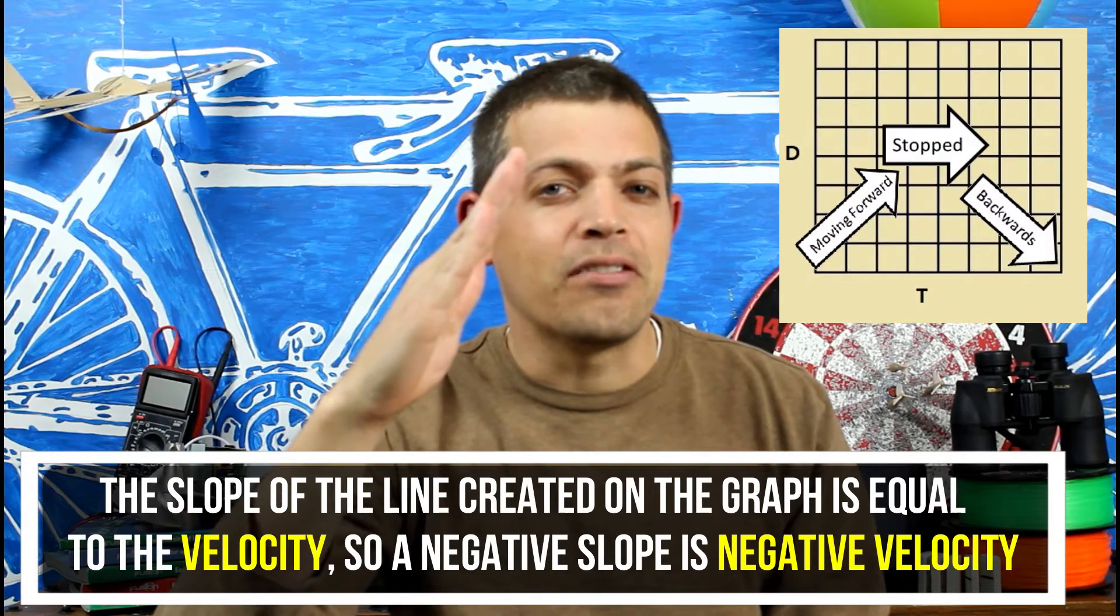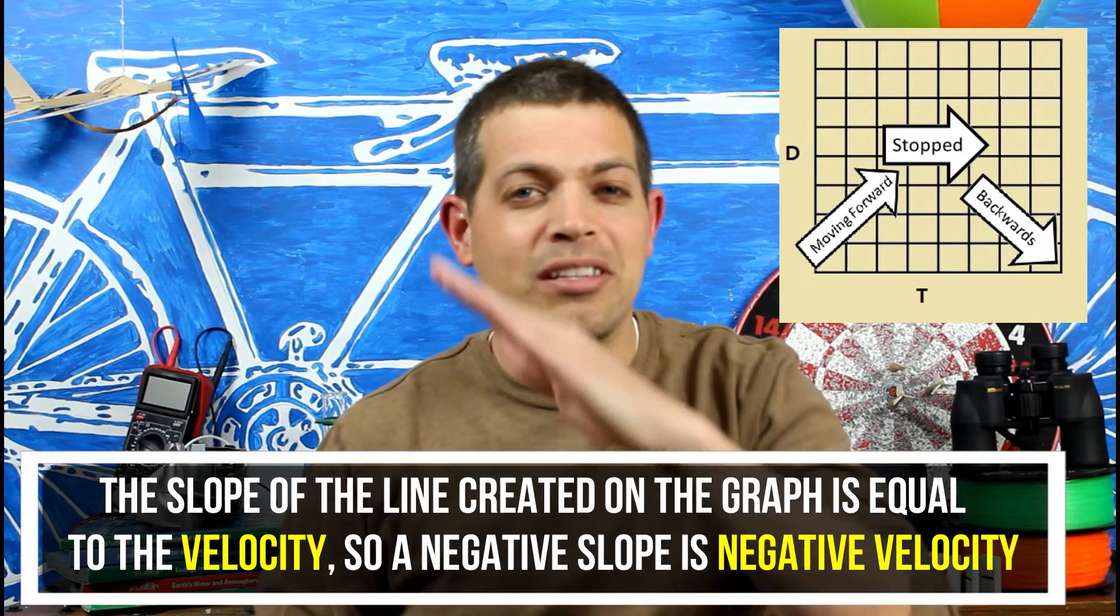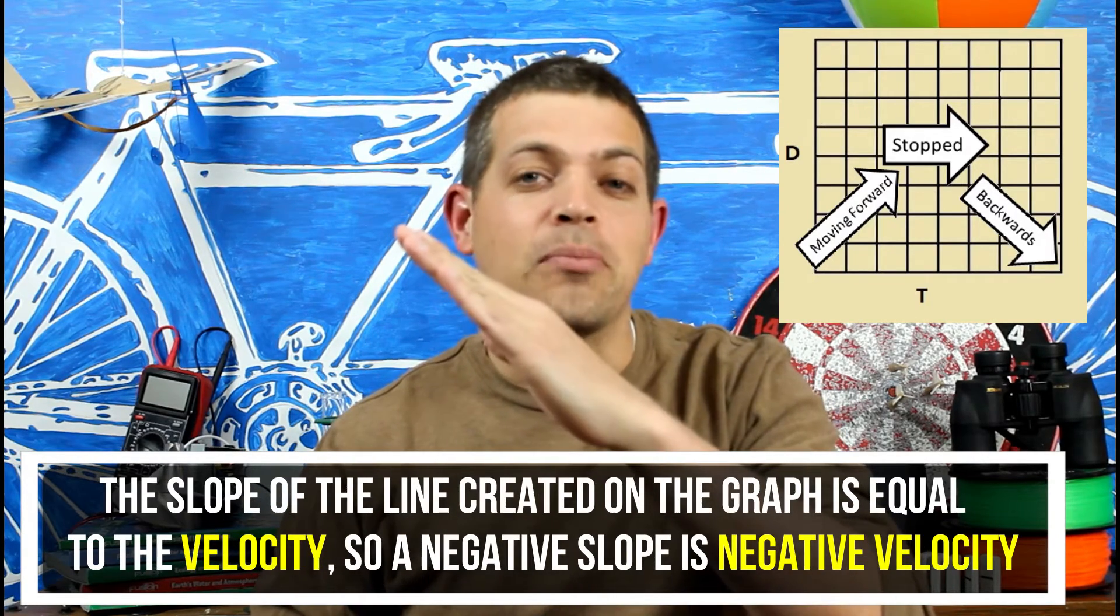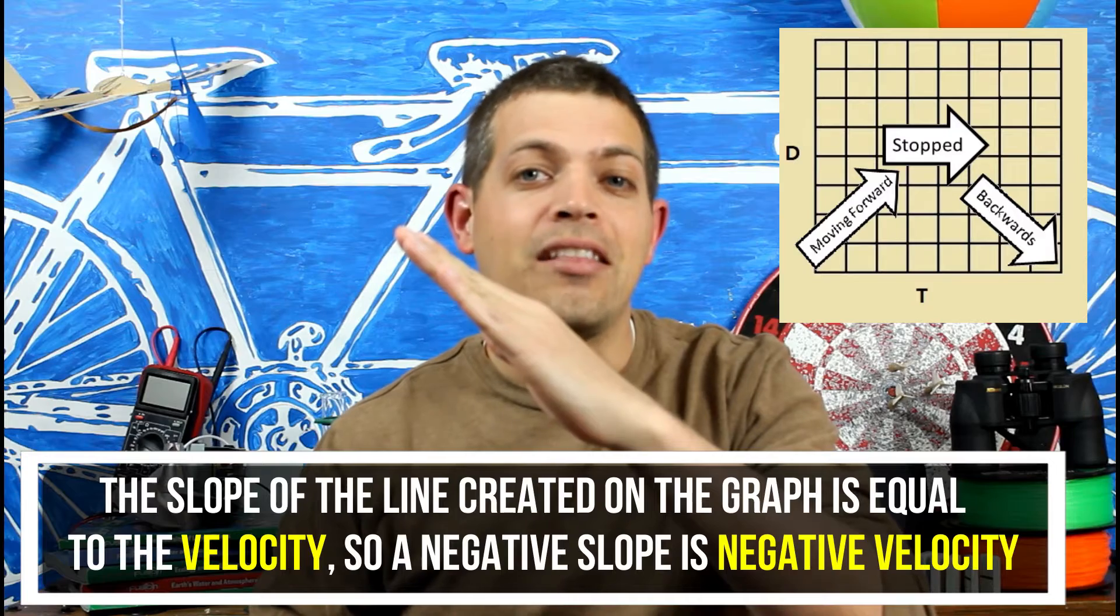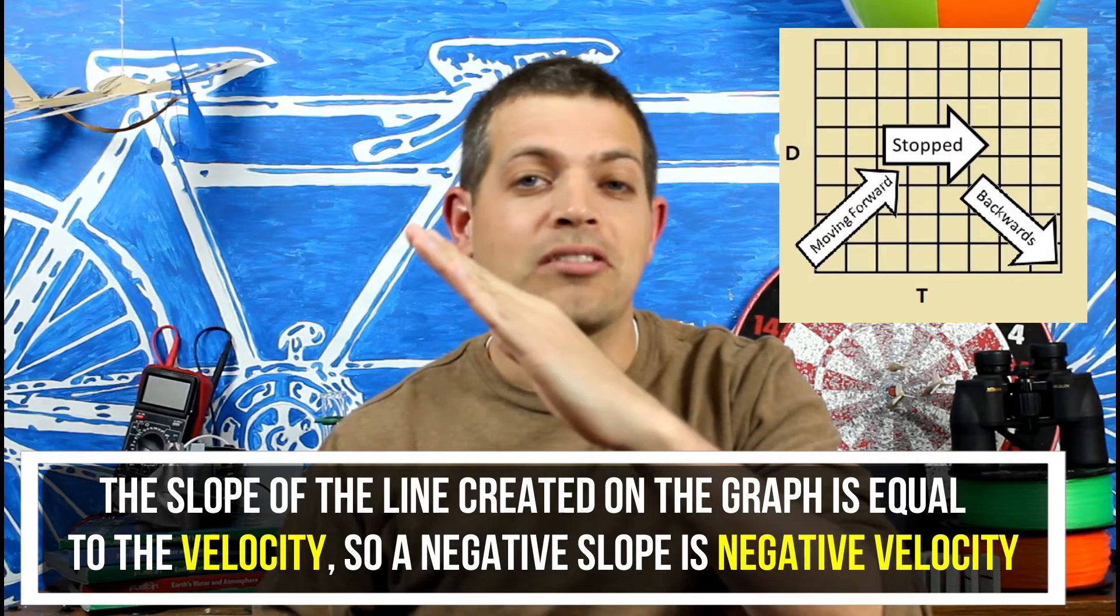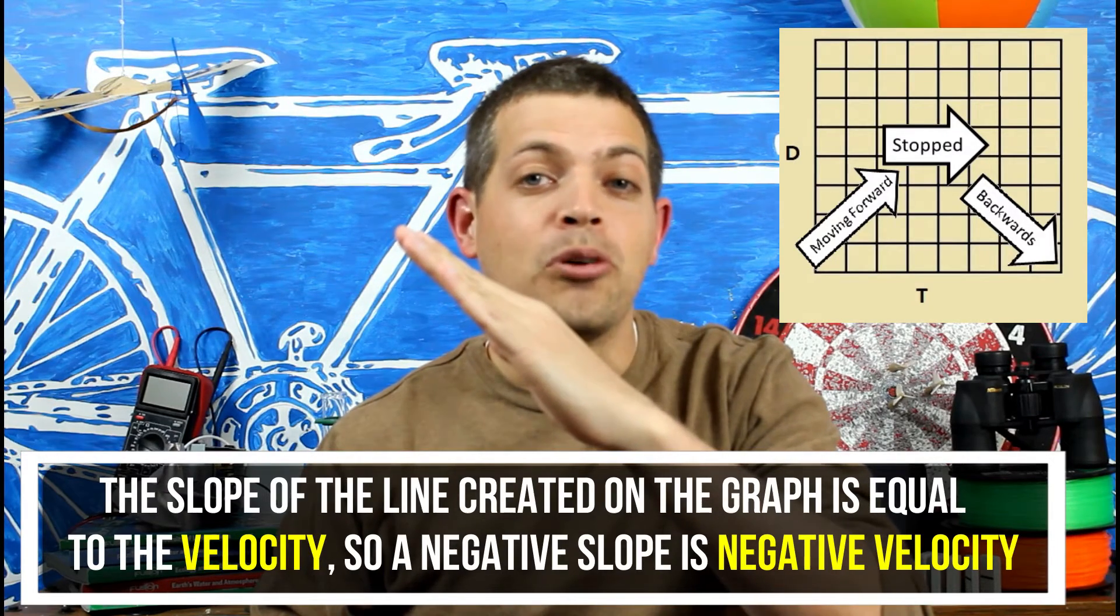And if the slope is going downwards, it's a negative slope. That means we're actually moving in the opposite direction. So maybe instead of going forward, we're moving backwards.